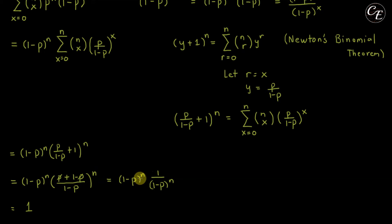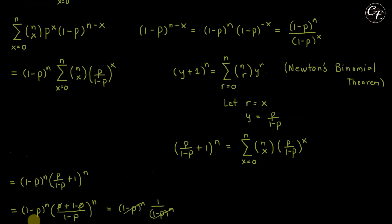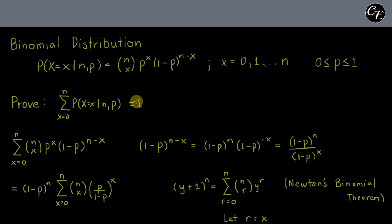So here 1 minus p raised to n and we can cancel out this one and this one. We'll get 1. So this completes our proof that the summation of the probability mass function of the binomial distribution is equal to 1.